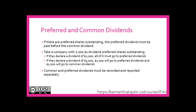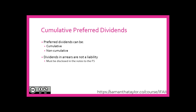If it is a preferred or common share dividend, we must ensure that all preferred share dividends are paid prior to the common dividend. For example, if a company has 2,000 one-dollar dividend preferred shares outstanding and declares a dividend of $1,000, all of that must first go to the preferred dividends. If the company declares a total dividend of $3,000, then $2,000 would go to the preferred shares (2,000 shares × $1 stated dividend) and the remainder to common dividends. Common and preferred dividends must be recorded and reported separately.